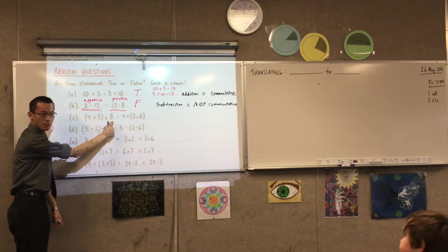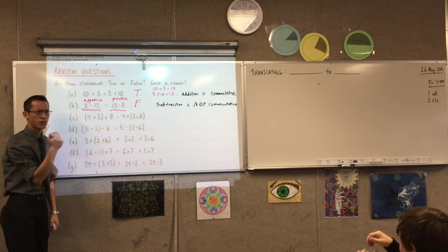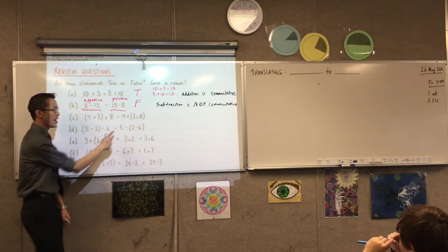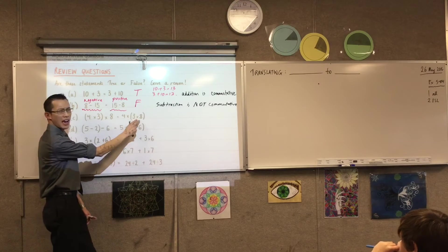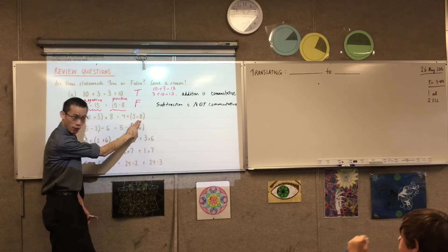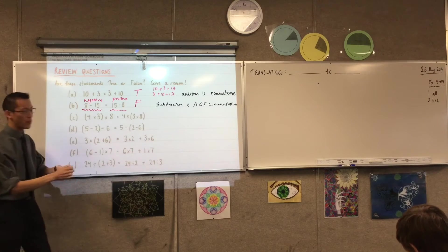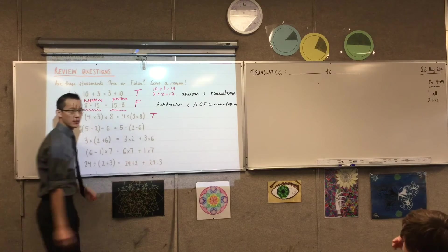So, you would have had 12 times 8, which is... What is 12 times 8? 96. It's 96. And then here you'd have 4 times... 24, which is still 96. So, that's why we can say... This is true. Okay?